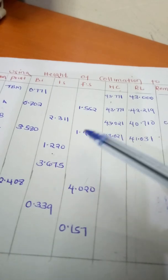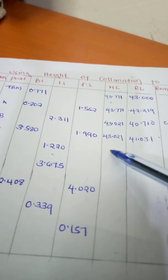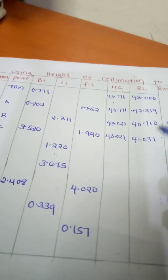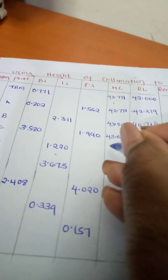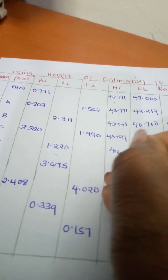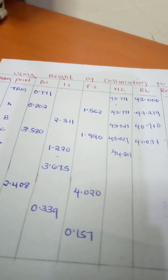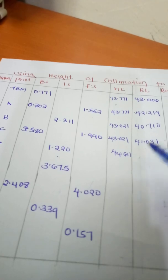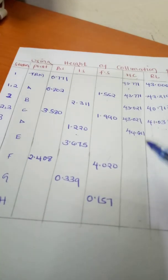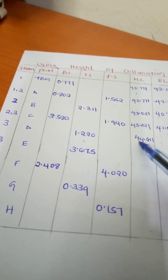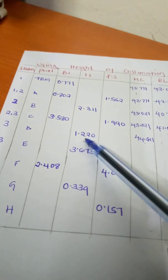At the change point, the new height of collimation is the reduced level plus the backsight: 41.031 plus 3.580, which gives us 44.611. The reduced level at point D is 44.611 minus 1.22.